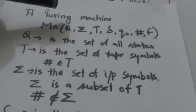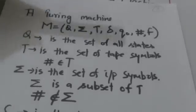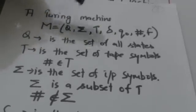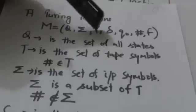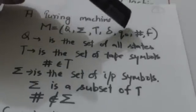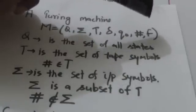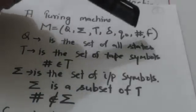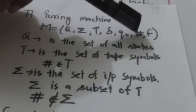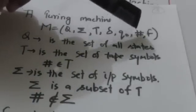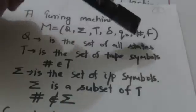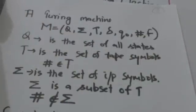A Turing machine M can be described by a seven-tuple: Q, Sigma, T, Delta, Q₀, hash, and F. The hash symbol represents the blank symbol.